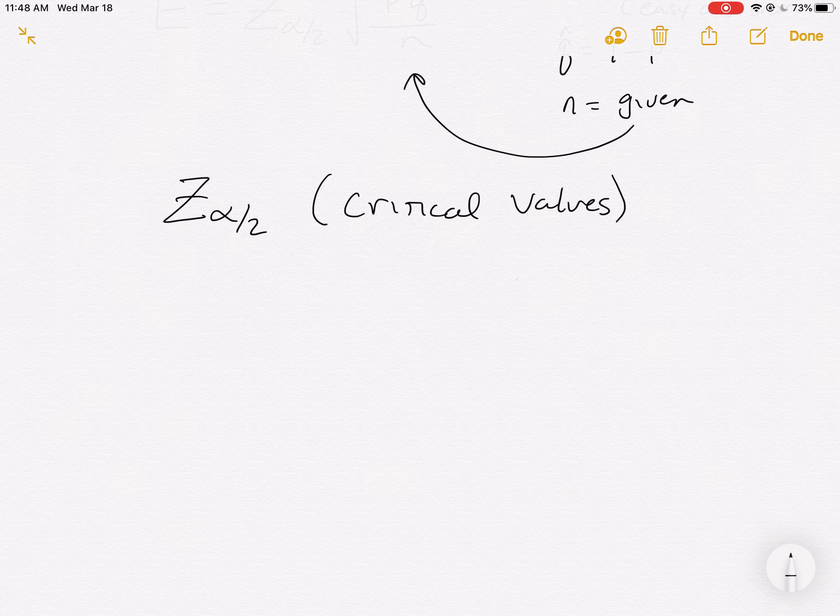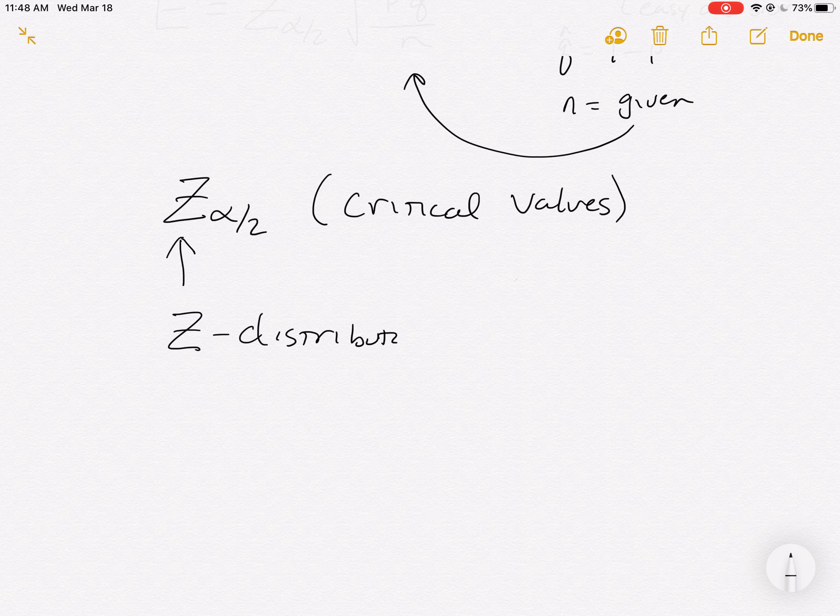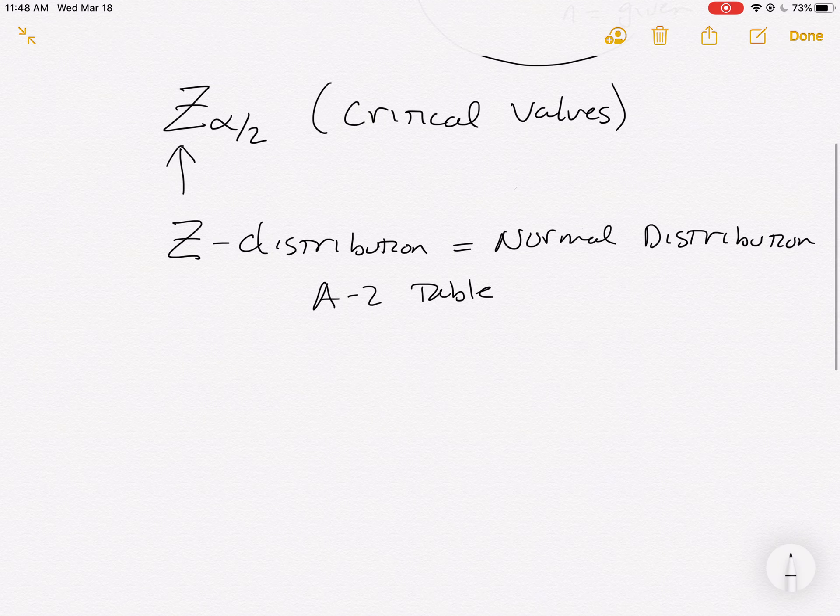Let's talk about how to find it. The first thing it's telling us as we look at it from left to right is that we're going to be using the z distribution. Well, the z distribution is equivalent to a normal distribution, and so we know where we're going to get this value from. We're going to get it from the A2 table.